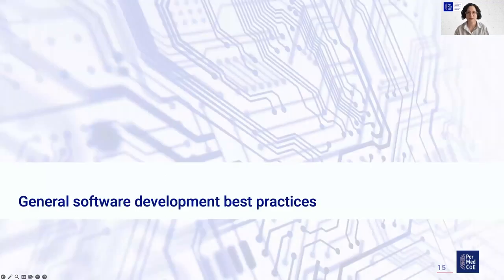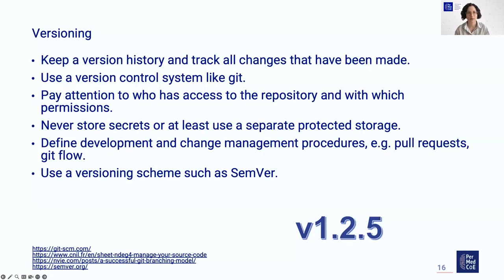Before going into details addressing these points, I want to talk about general software development best practices, which may not directly influence security but definitely do so indirectly. One best practice is versioning — you should always keep a version history of your code and track all changes made. Ideally, use a version control system like Git. You should pay attention to who has access to your repository and with which permissions, and you should never store any secret data like encryption keys or passwords in Git repositories.